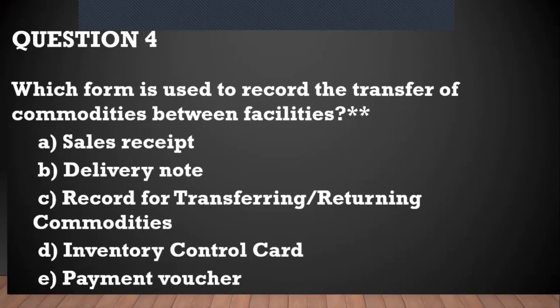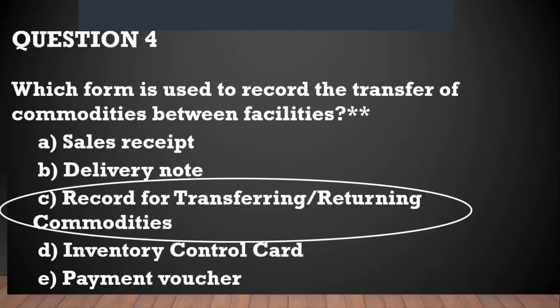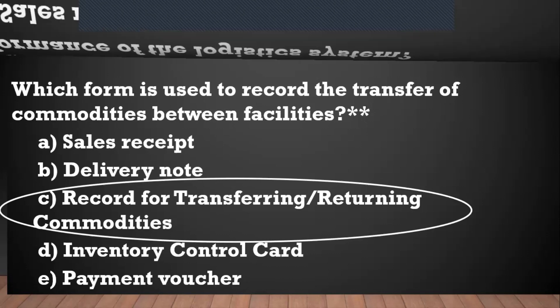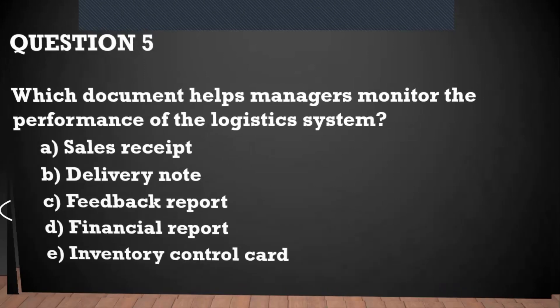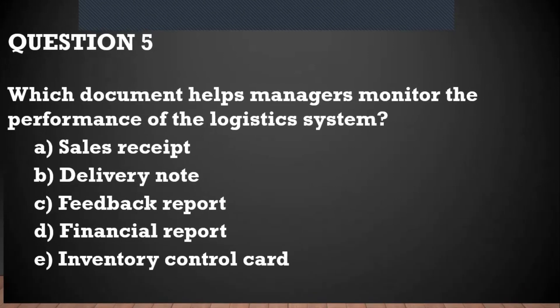If you look at option C, it's a giveaway — you have a record for transferring and returning of commodities. Question number five: which document helps managers to monitor the performance of the logistics system?